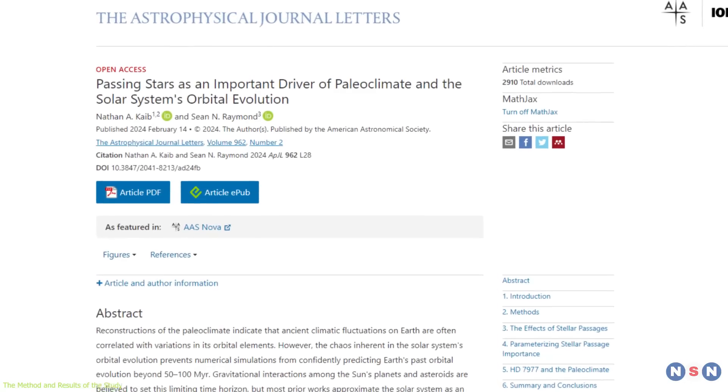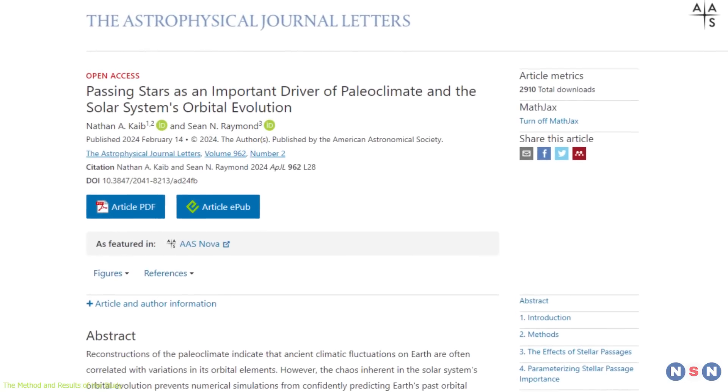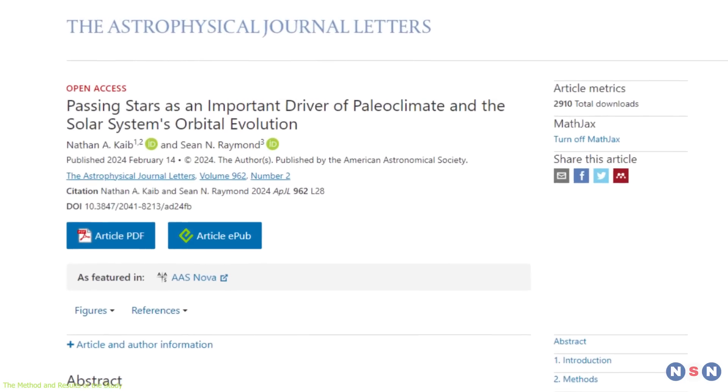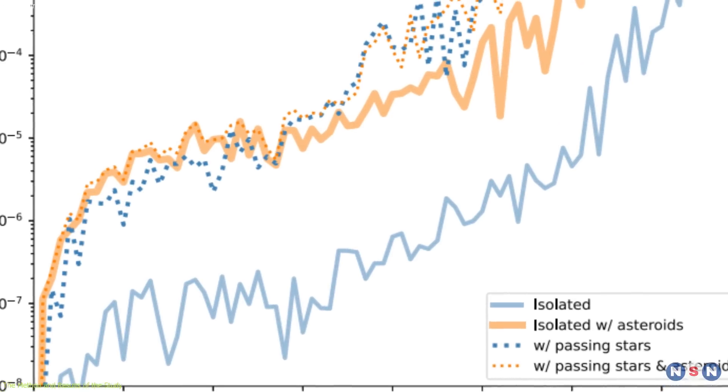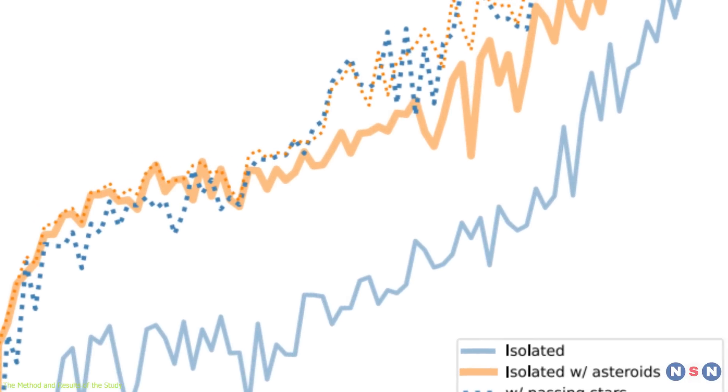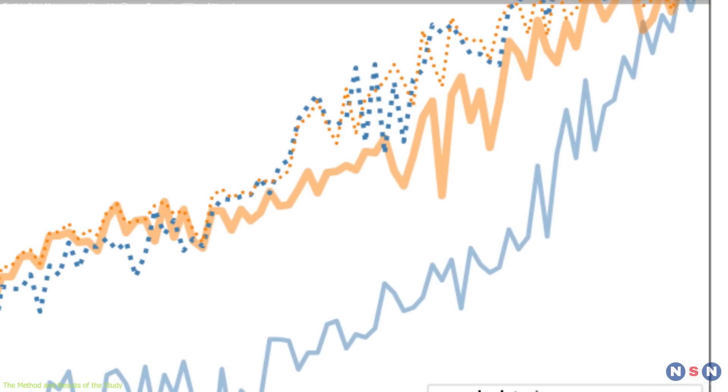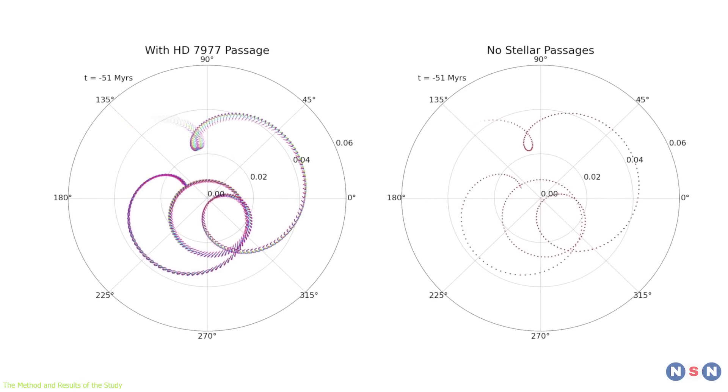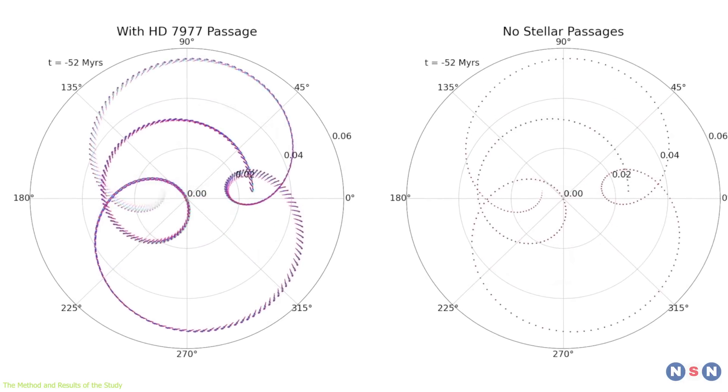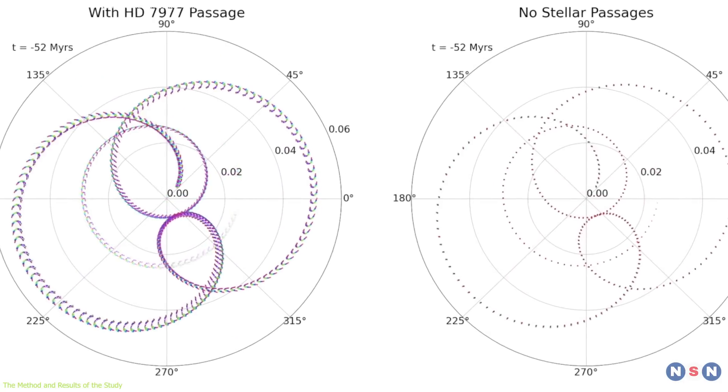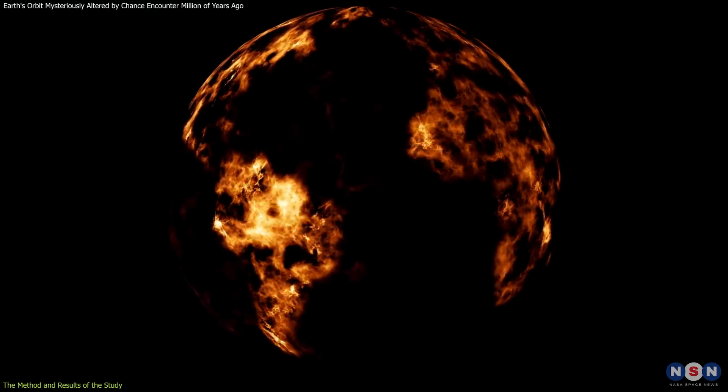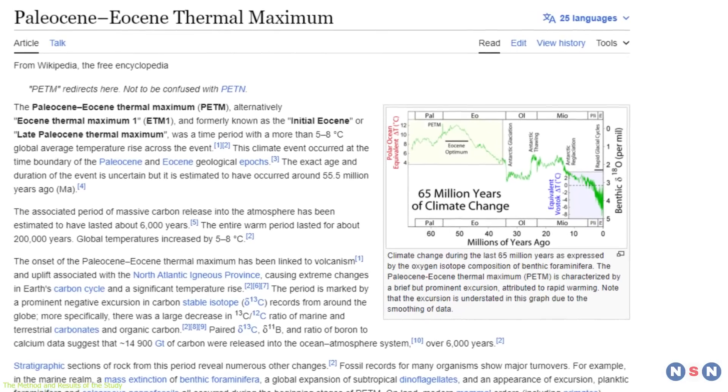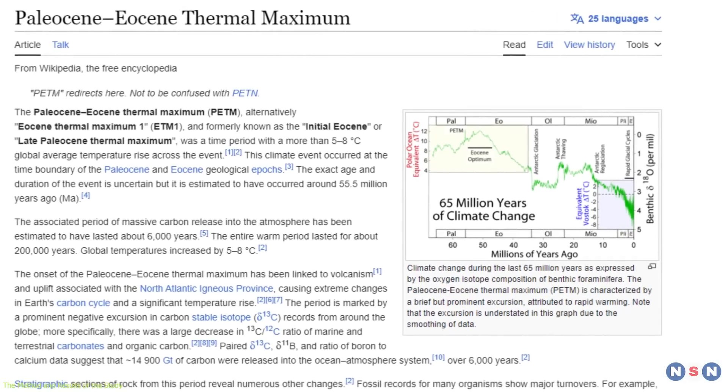The study we are talking about was published on February 14, 2024, in the journal Astronomy and Astrophysics. The authors used computer simulations to explore the effects of passing stars on the orbital evolution of the solar system. Why did they do that? Well, they were interested in finding out if a passing star could have caused changes in Earth's orbit that coincided with a period of rapid global warming known as the Paleocene-Eocene Thermal Maximum, or PETM for short.